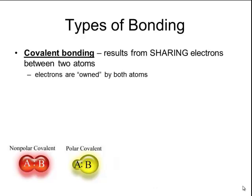The electrons are technically owned by both atoms. Sometimes those electrons are shared equally, and sometimes they're shared unequally, but any time the electrons are being shared, it involves covalent bonding.